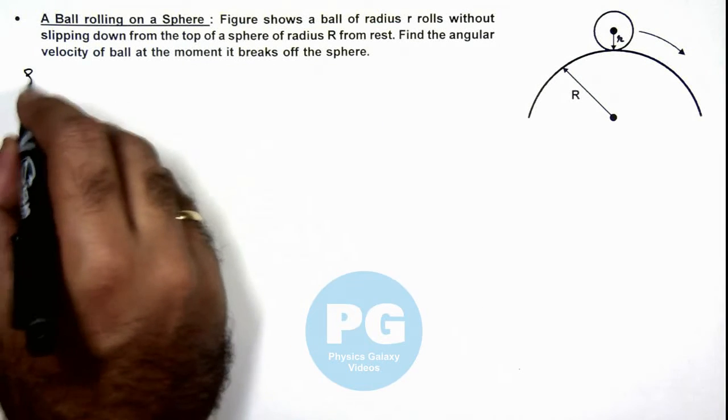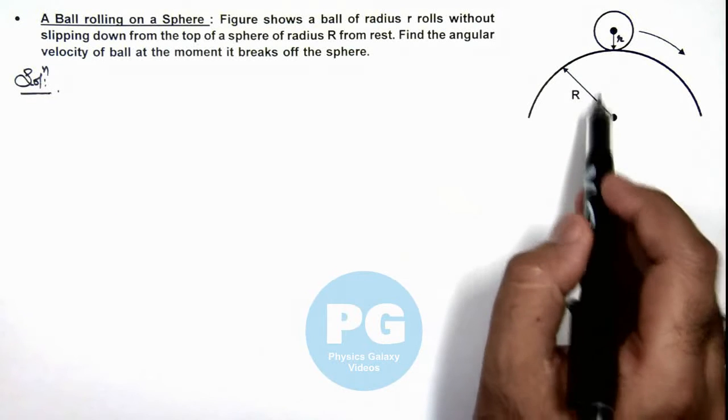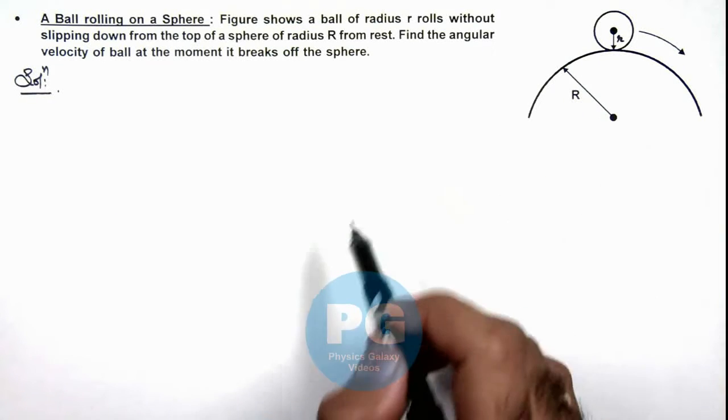We are required to find the angular velocity of the ball at the moment it breaks off the sphere. In the solution, we can write if at an angle theta from the initial position the ball breaks off.